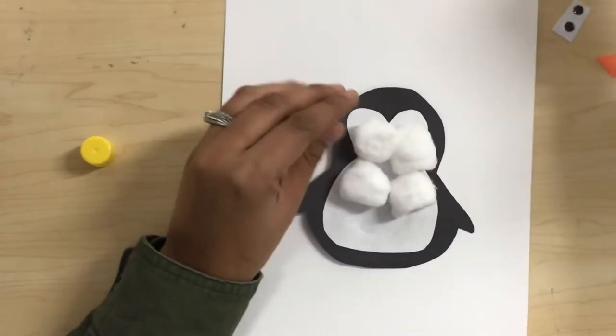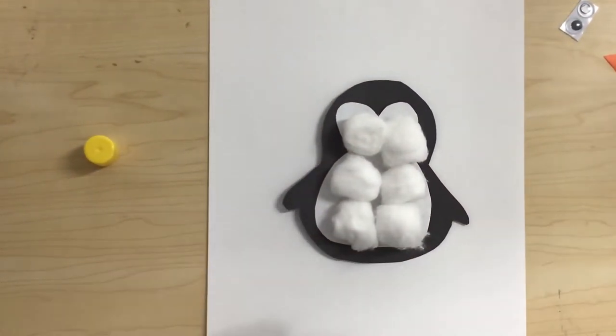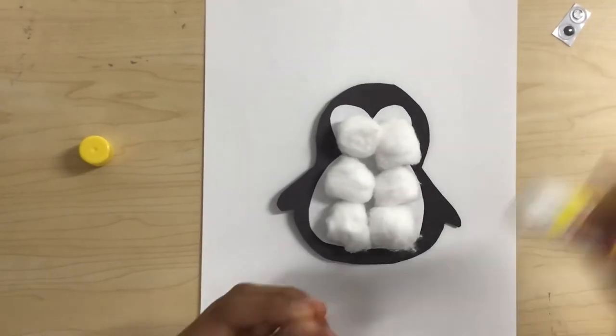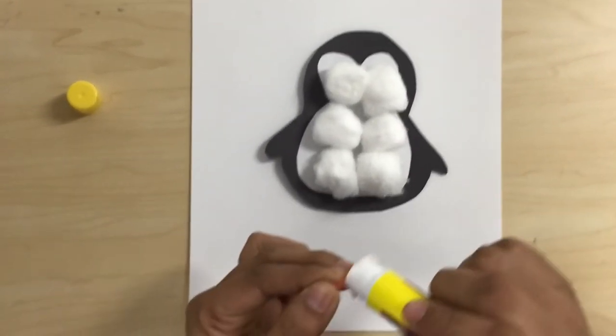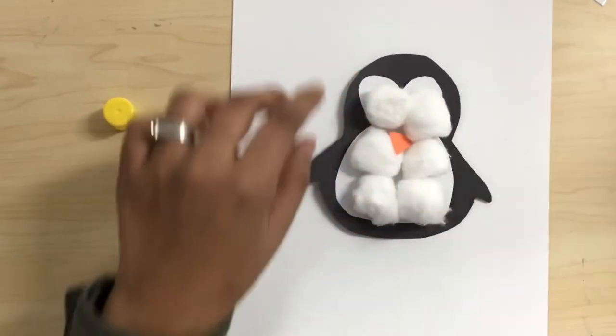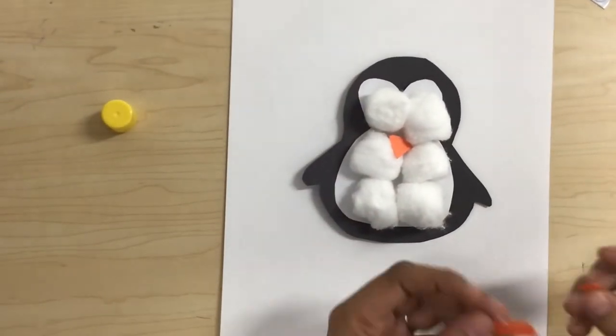After we are done doing the cotton balls, we're going to glue the beak cut out on the penguin.